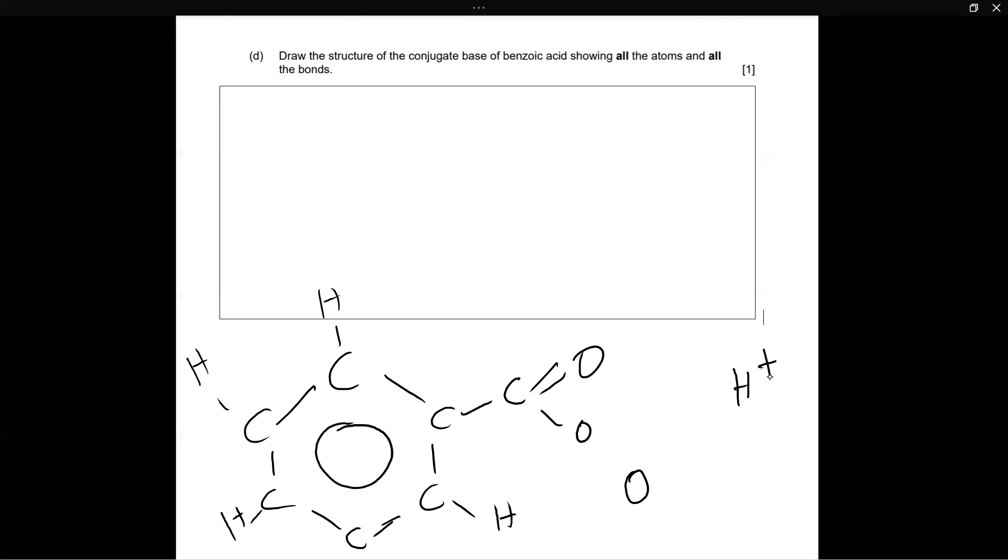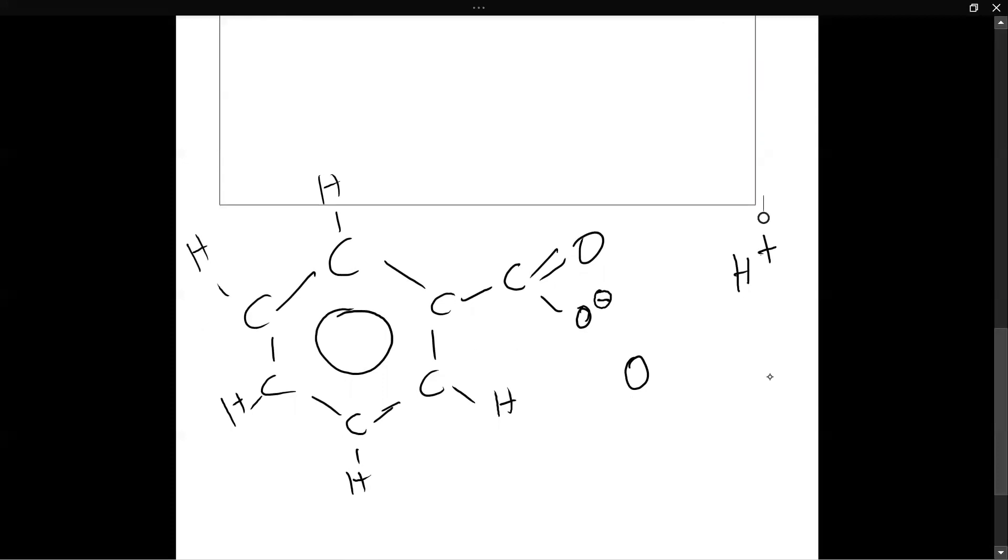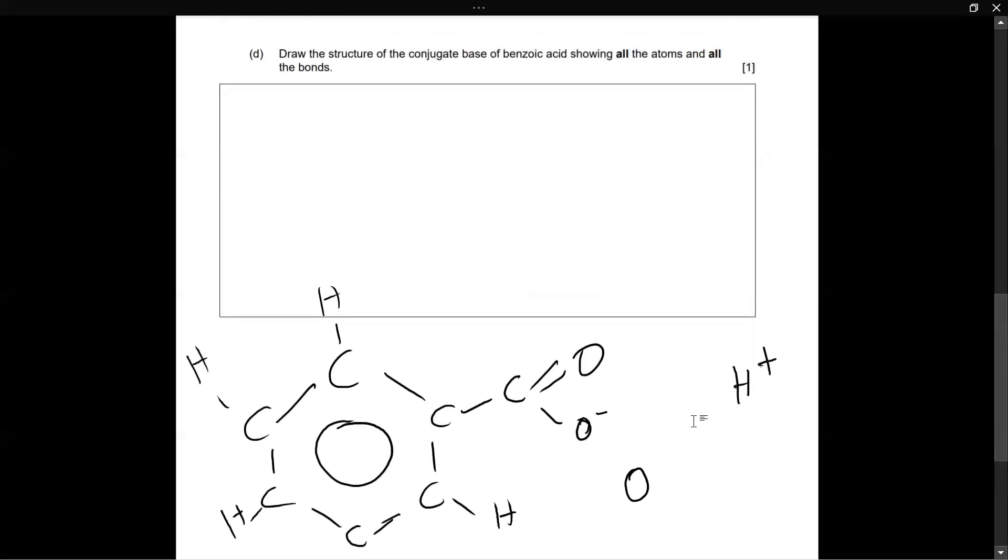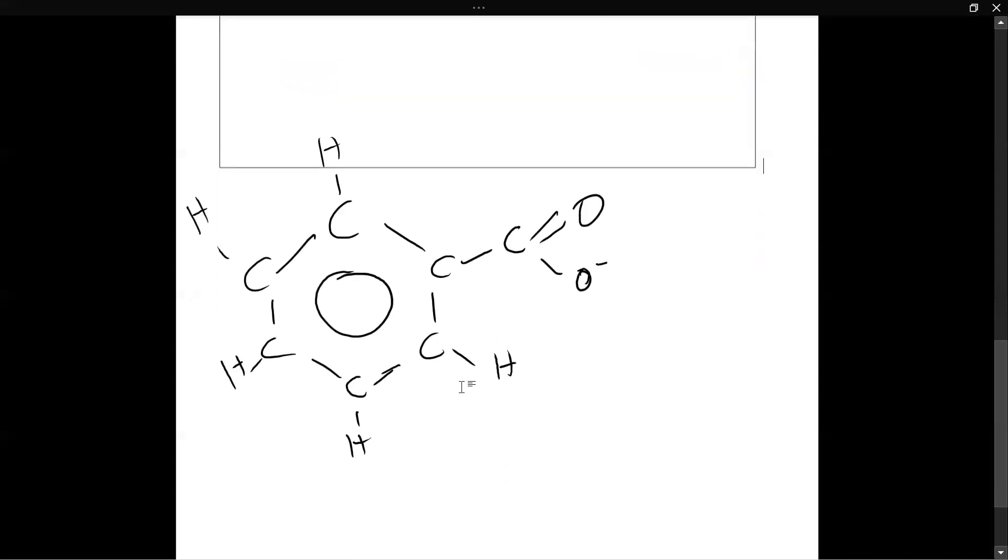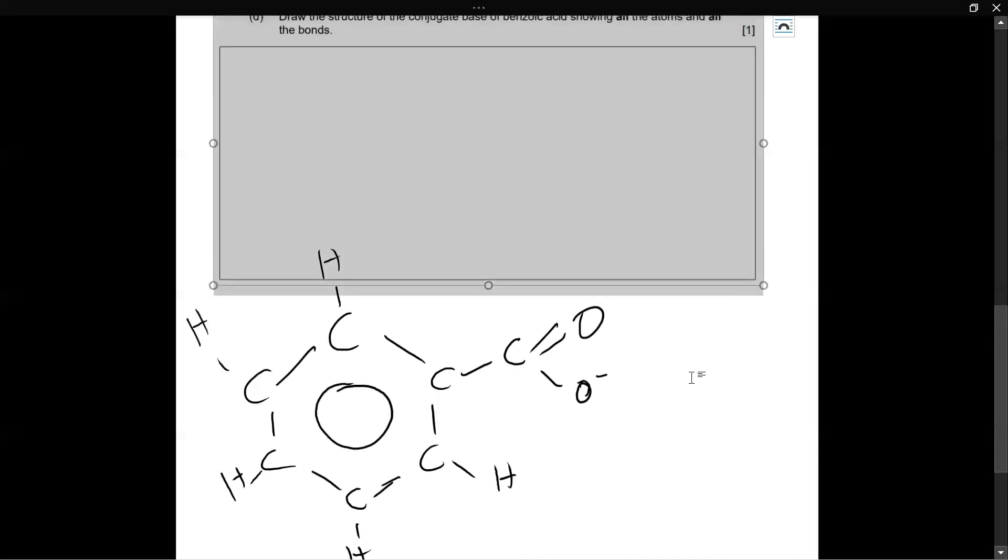And that therefore this oxygen gets a negative charge on it. And you can probably see why it gets a negative charge because it has one additional electron now. So it kind of becomes like an ion. So you have to put that negative charge on it. And that is literally the structure of the conjugate base of benzoic acid. That's it. Simple, right? That's all you had to do. You just had to remove the hydrogen and put a negative sign on the oxygen. That is it.